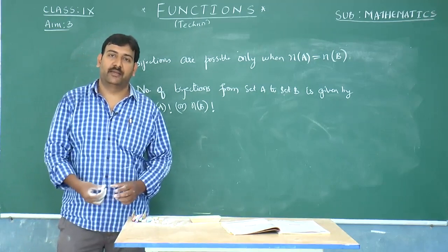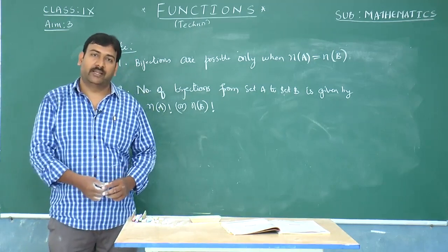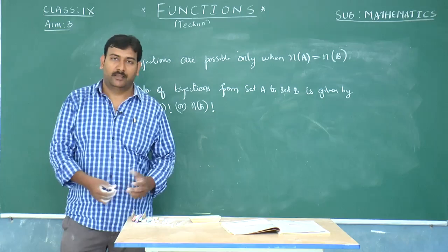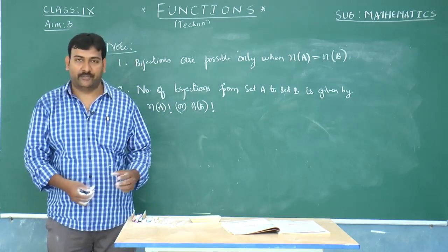The bijections are possible only when n(a) is equal to n(b). If both n(a) and n(b) is equal to 3, then the total number of bijections is going to be given by 3 factorial.